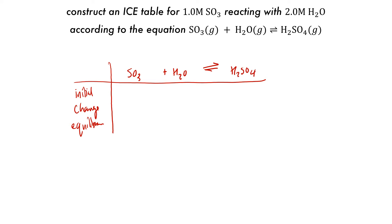We know the initial concentrations: SO3 is 1.0 molar, H2O is 2.0 molar, and for H2SO4 we'll assume it's 0 because we aren't explicitly given that in the question. The change will be minus X for SO3 and H2O, and plus X for H2SO4, giving the final equilibrium as 1.0 minus X for SO3, 2.0 minus X for H2O, and X for H2SO4. With these values filled in, we have successfully constructed our ICE table.